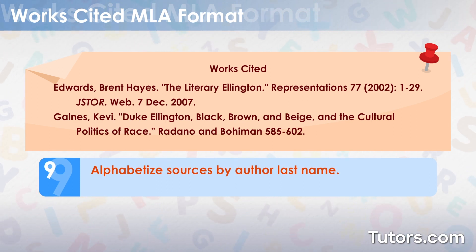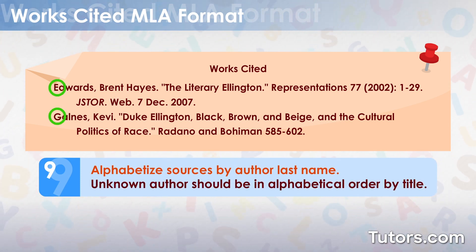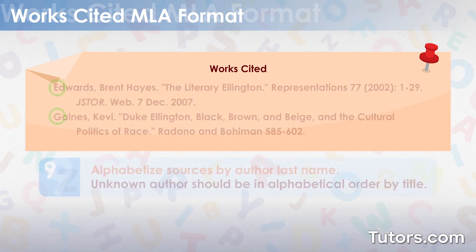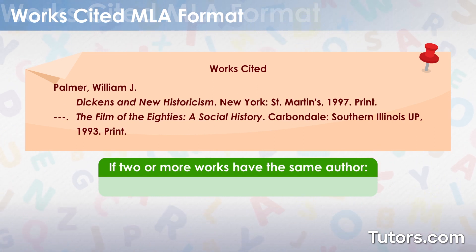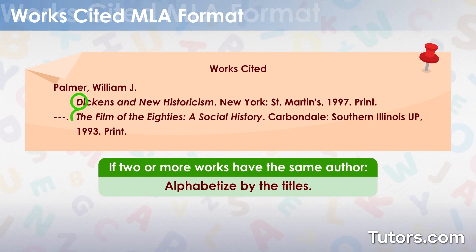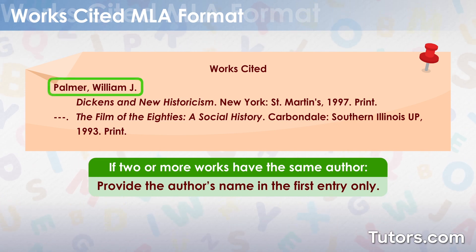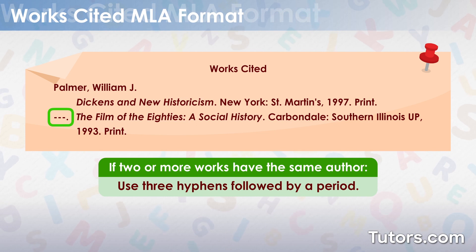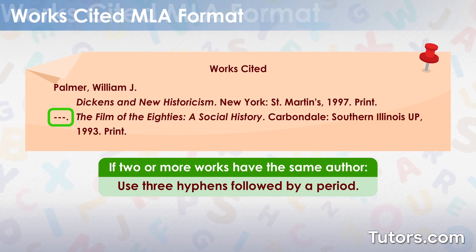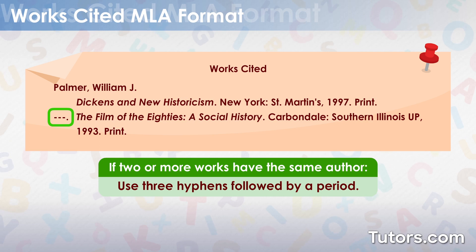Alphabetize sources by the author's last name. Works with no known author should be in alphabetical order by title. If two or more works have the same author, alphabetize by the titles. Provide the author's name in the first entry only, and use three hyphens followed by a period in place of the name for the entries that follow.